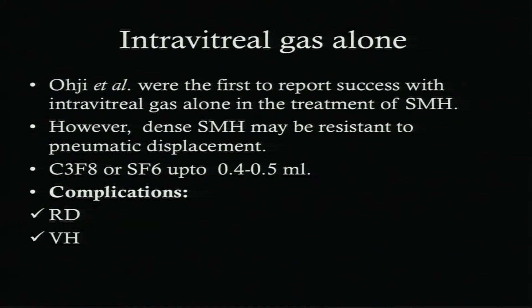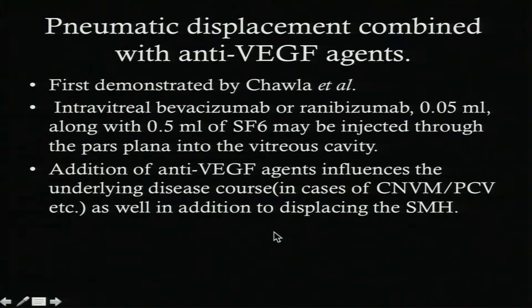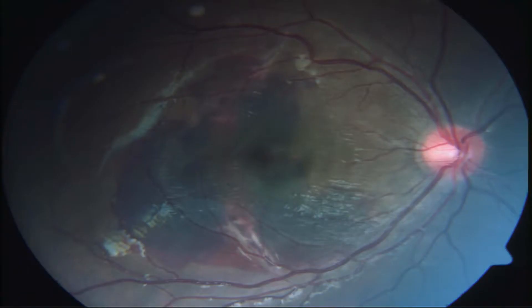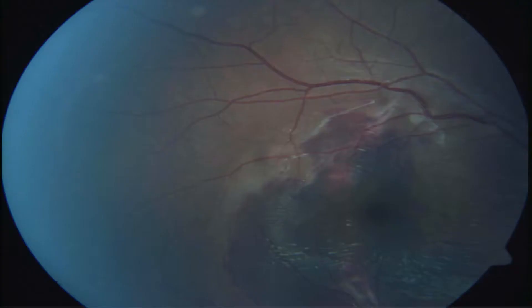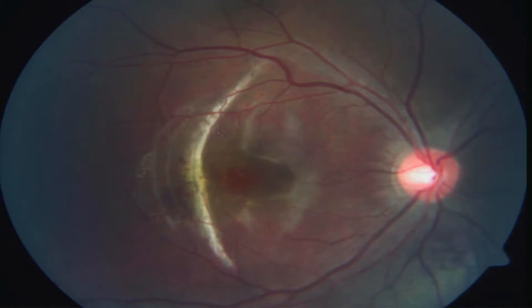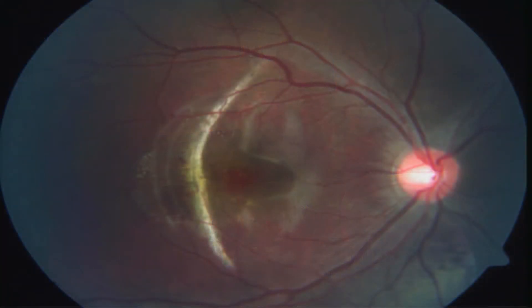Before injecting gas, look for any inferior breaks, as gas injection creates traction on the retina and the chance of detachment is high. This case shows a choroidal tear temporal to the fovea — fortunately not passing through it. After gas injection the blood was displaced and absorbed, with the patient achieving good vision, though we watch for possible CNVM development after eight months or later.